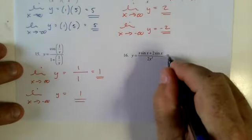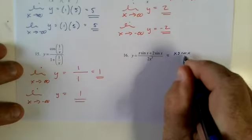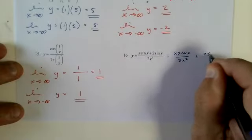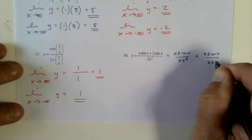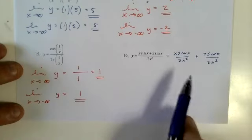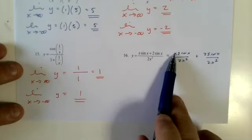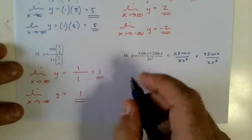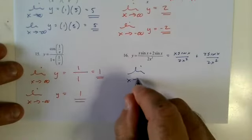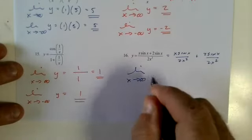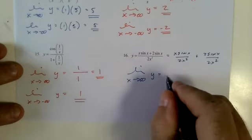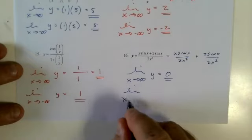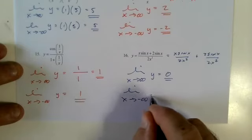This one we could break up into x·sin x over 2x² plus 2·sin x over 2x². Even though this has an x on top, it's just going to be 0 plus 0, so this is just going to vanish to nothing. It does not matter if we are approaching positive or negative infinity.